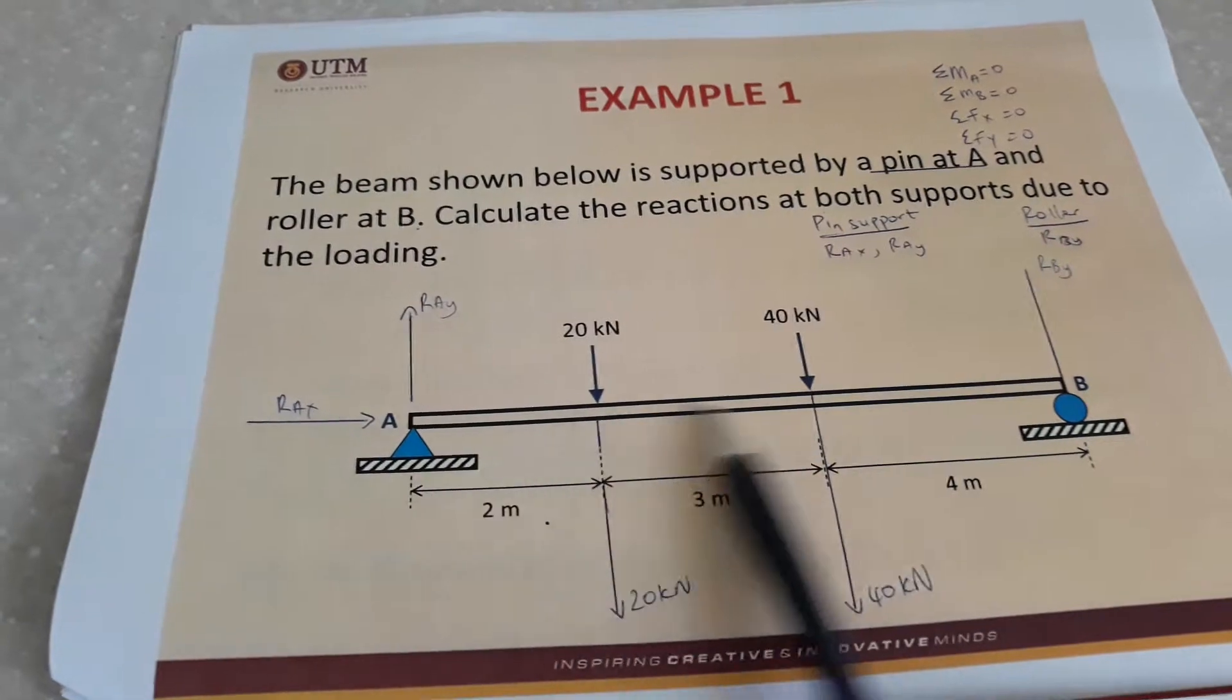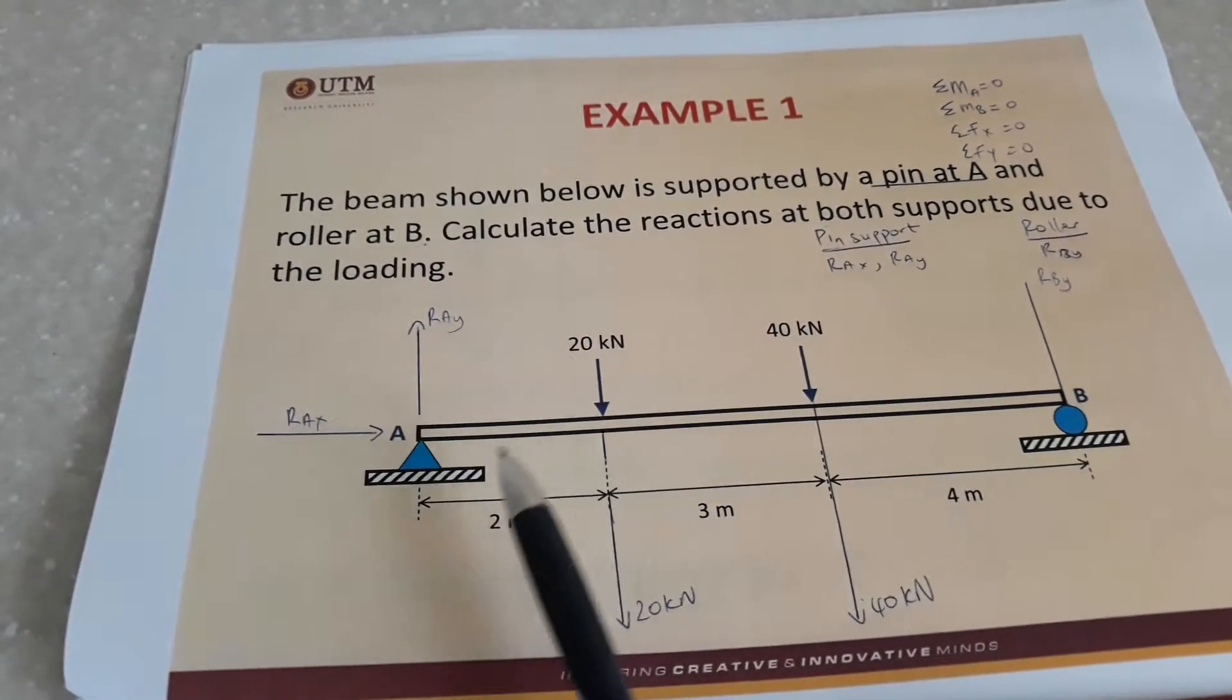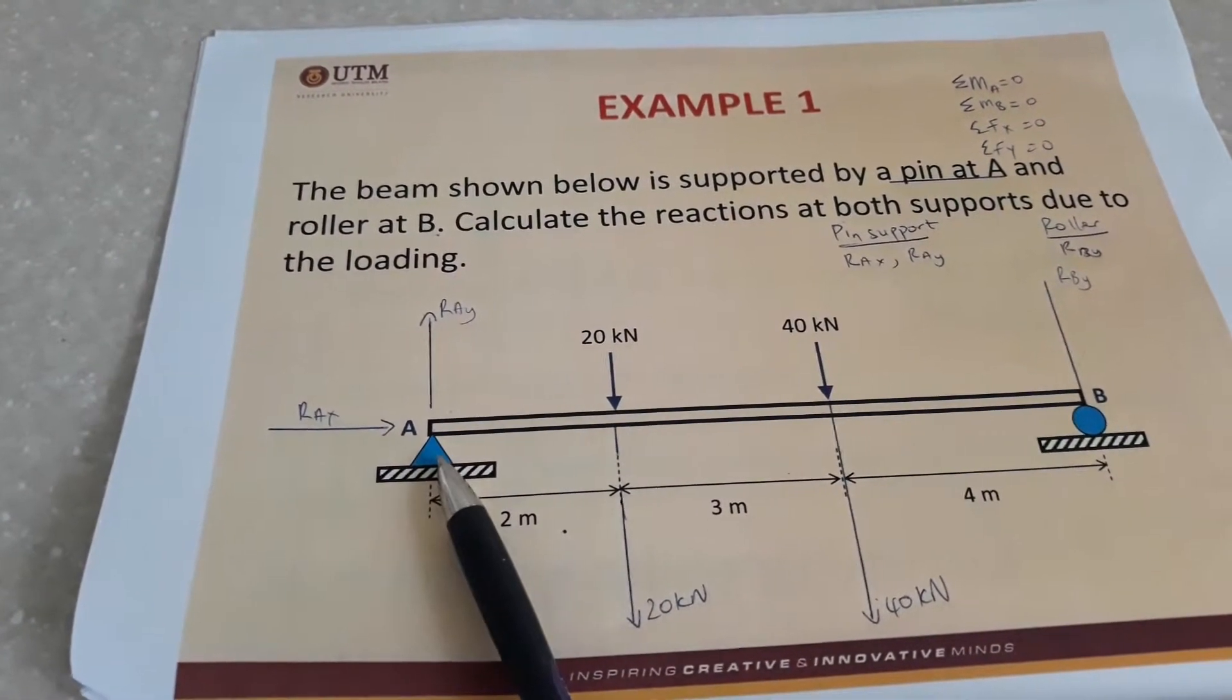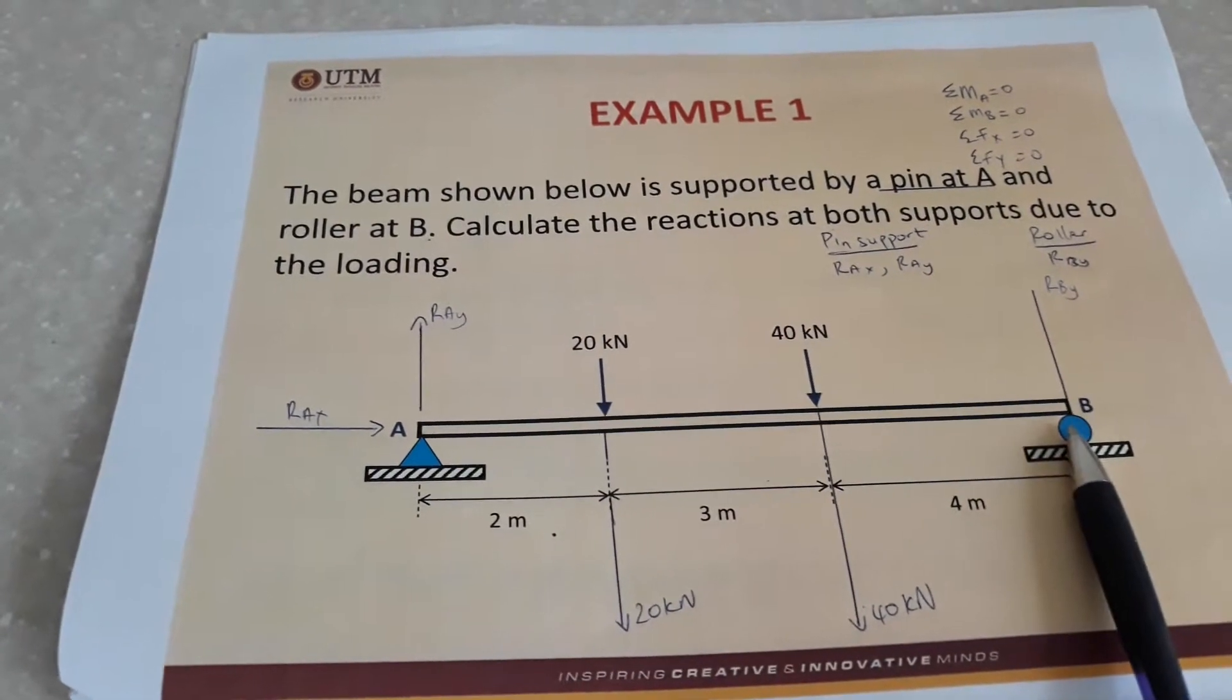In this example we have a beam which is supported at A as a pin support and at B as a roller support.